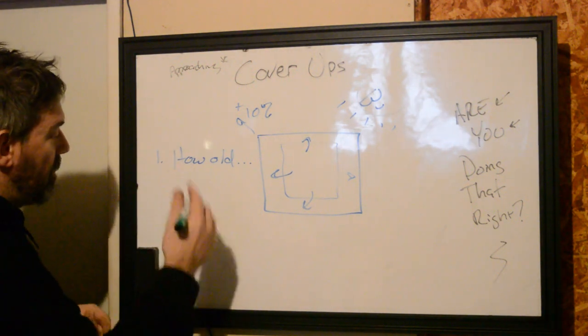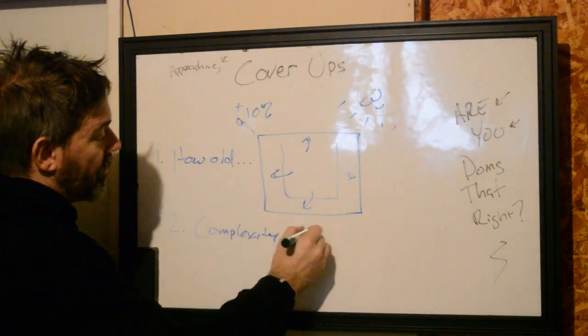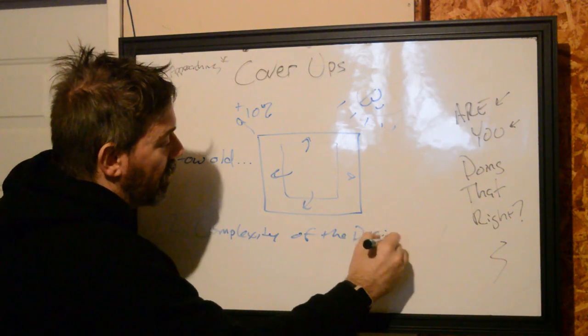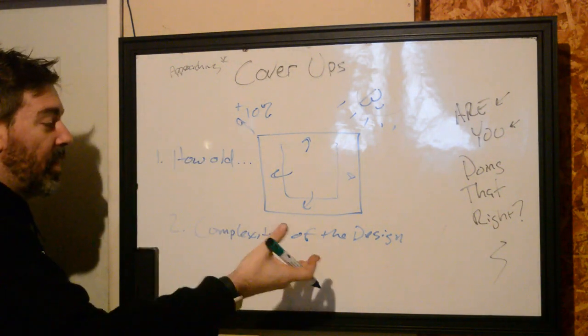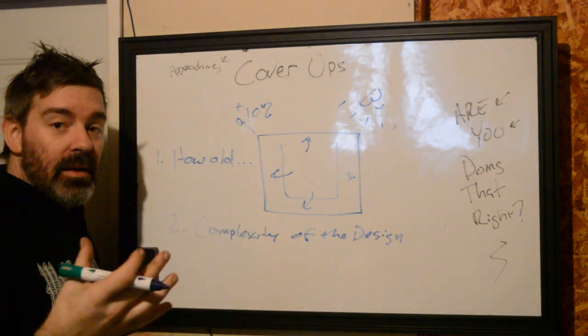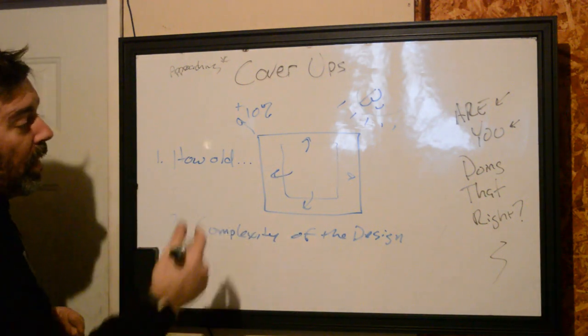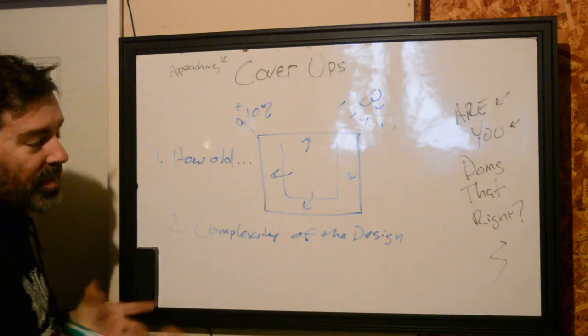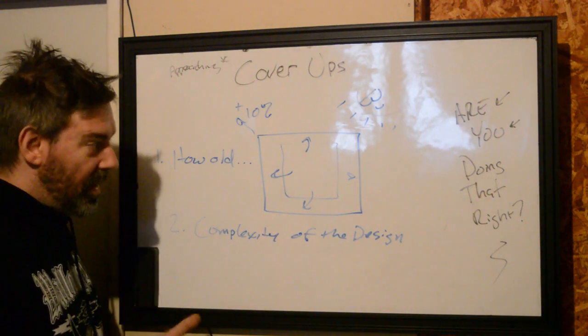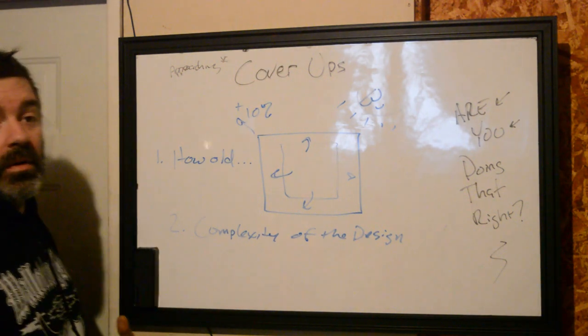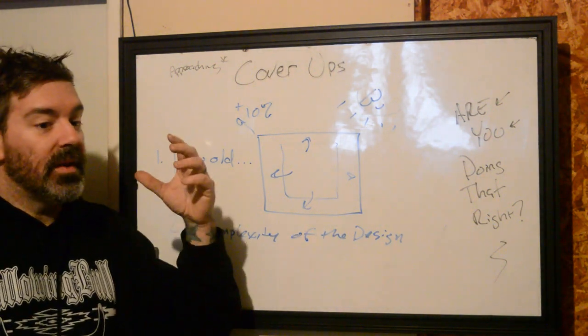The second thing we need to check, and this is a mental note, is the complexity of the design. And this is really important when we start thinking about the requests of the client. When the complexity of the design is less than what is already in the skin, it makes it much more difficult to cover up. As let's say that they have a solid black bit of tribal or something that they just don't like and they want to cover it with fine line flowers. It can be done. It's just going to be exceptionally difficult to do. And that'll turn it into a money pit. So the complexity is something that you have to look at.